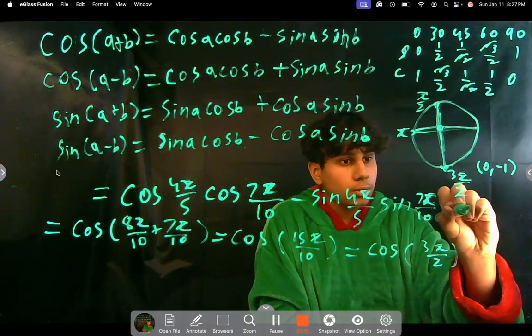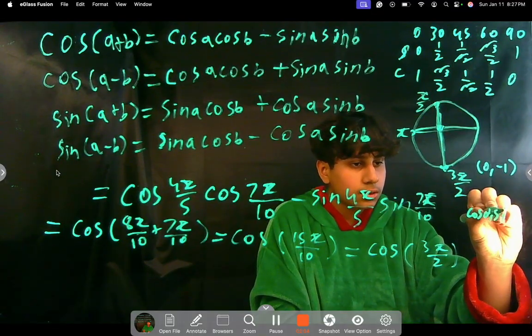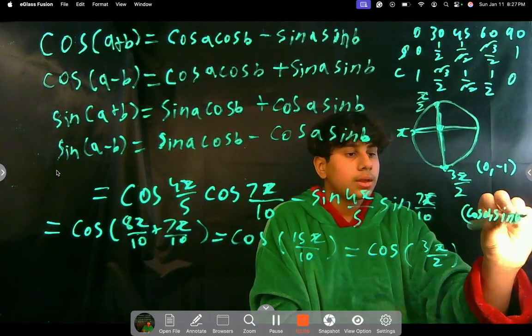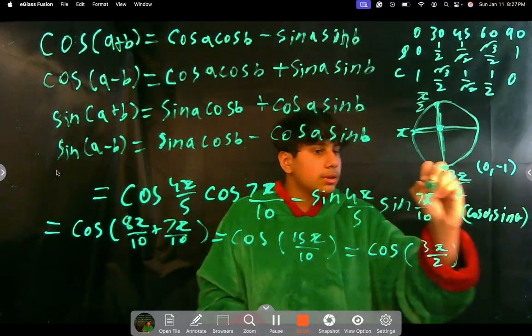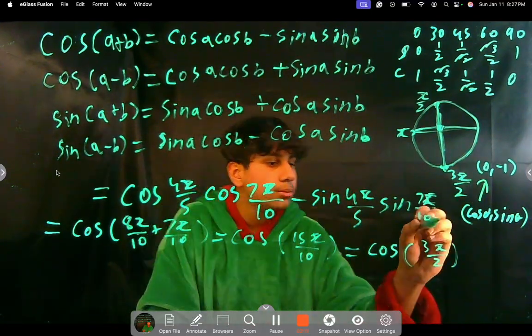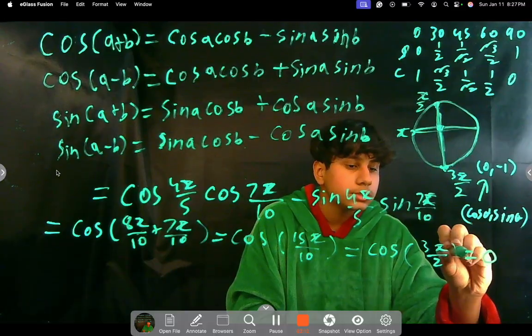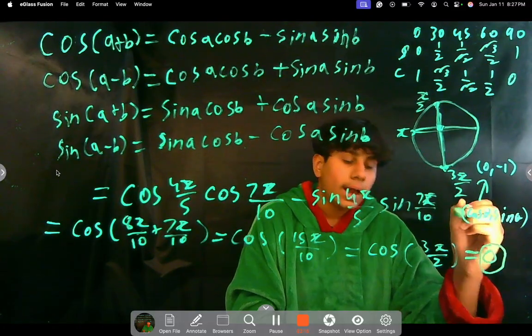So here, this point is (0, -1). And since every point in the unit circle is always cosine θ, sine θ, we know that cosine here is 0. Cosine of 3π/2 equals 0, so the answer here is 0.